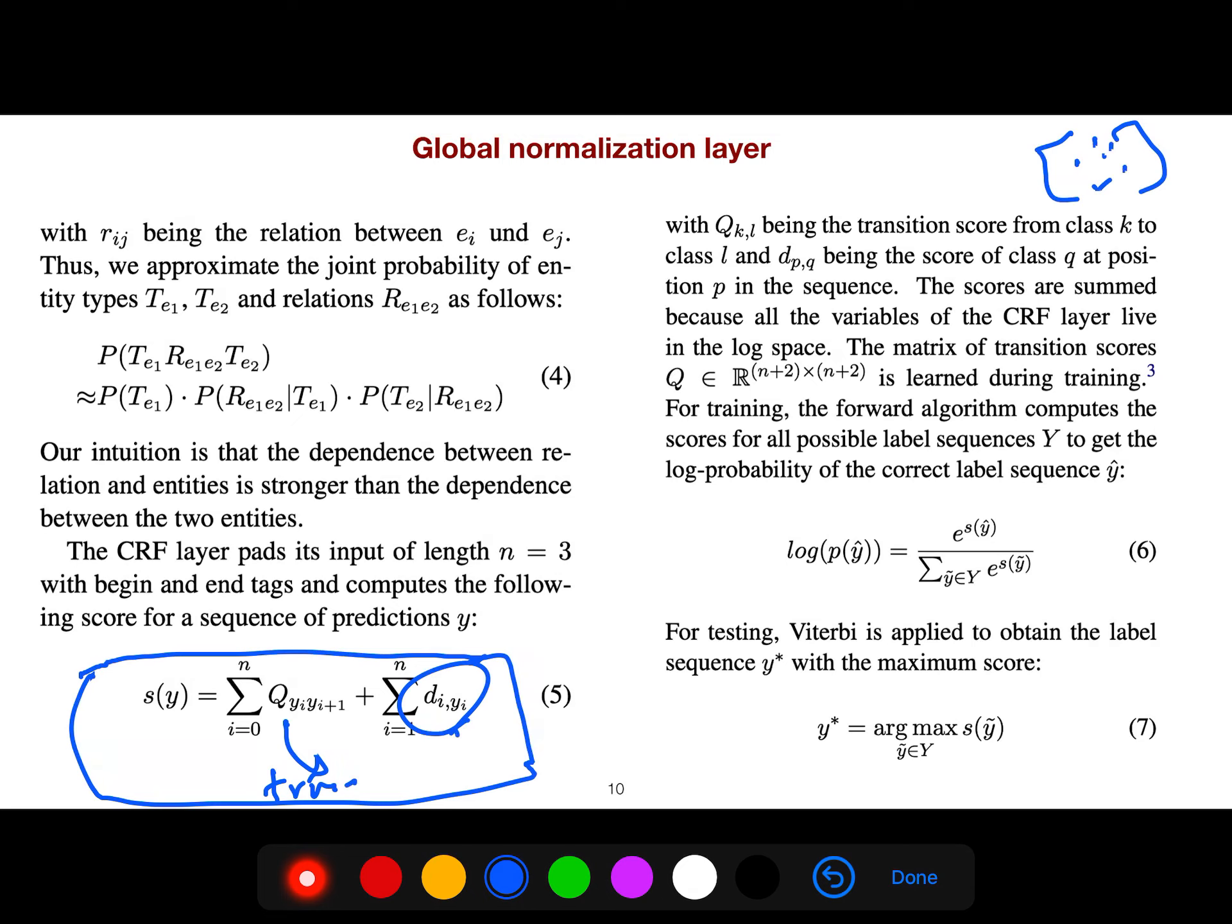For training, the forward algorithm computes the score of all possible label sequences to get the log probability of the correct label sequence. This is the log likelihood—log probability, which is a softmax over all scores.